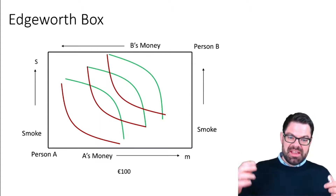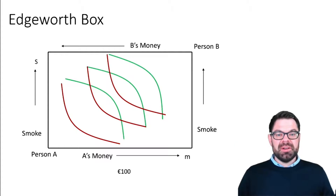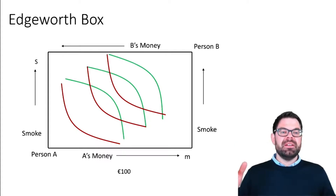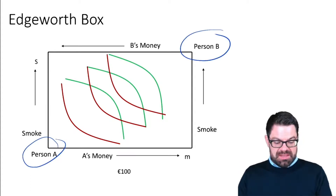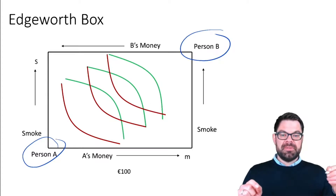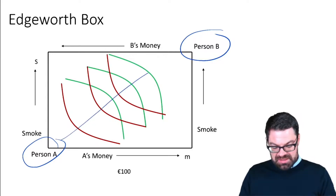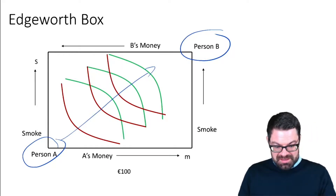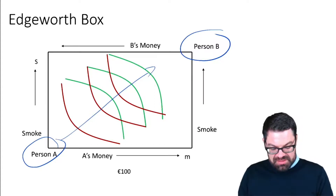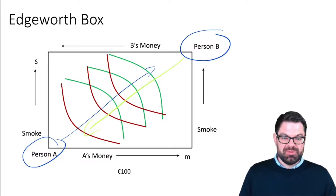This gives us an Edgeworth box where person A's origin is down here and person B's origin is up here. Person A's utility increases as we move north-east from that person's origin, and person B's utility increases as we go south-west from that person's origin in the Edgeworth box.